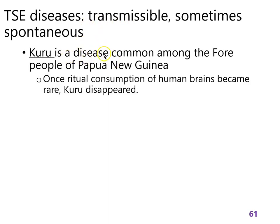Kuru is the first example of transmission. The Fore people in Papua New Guinea had a ritual at funerals of consuming the brain of the deceased as a respectful way to keep them in the community. Now that we know about prions, we know you cannot go near someone else's brain, because that's the most direct way to get a prion disease going.